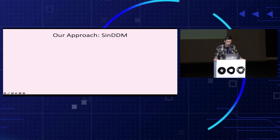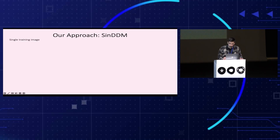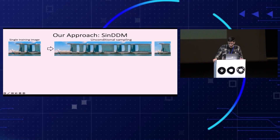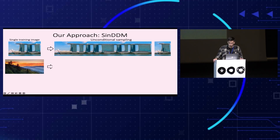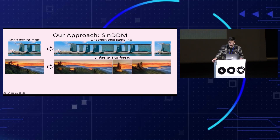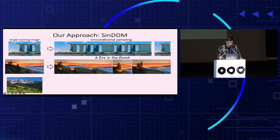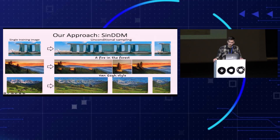Here, we propose to combine the approach of internally trained generative models with the power of diffusion models. We introduce CIN-DDM, a diffusion-based single image generative model. Like existing single image models, once CIN-DDM is trained on a single image, it can generate diverse samples of arbitrary dimensions. And like conventional diffusion models, the sampling process can be easily guided. For example, we can control the content of generated samples using text by leveraging a pre-trained CLIP model, and we can also control the style of the samples in a similar manner.